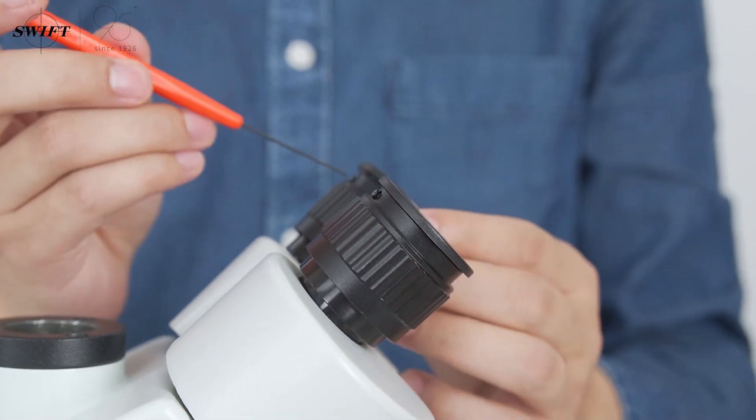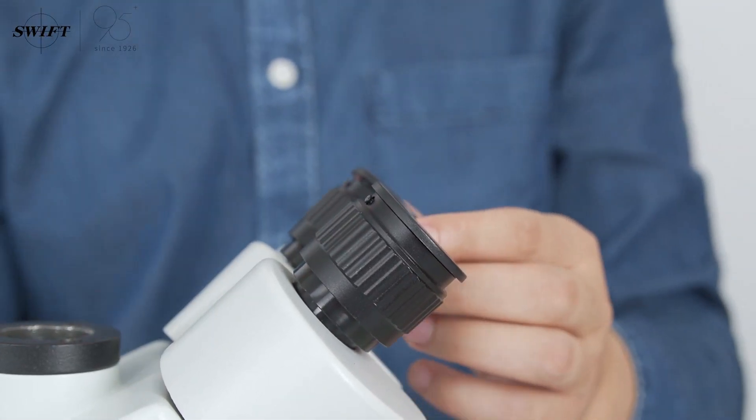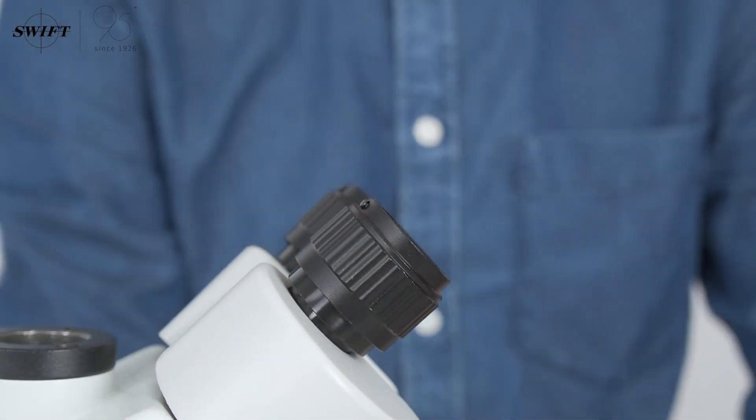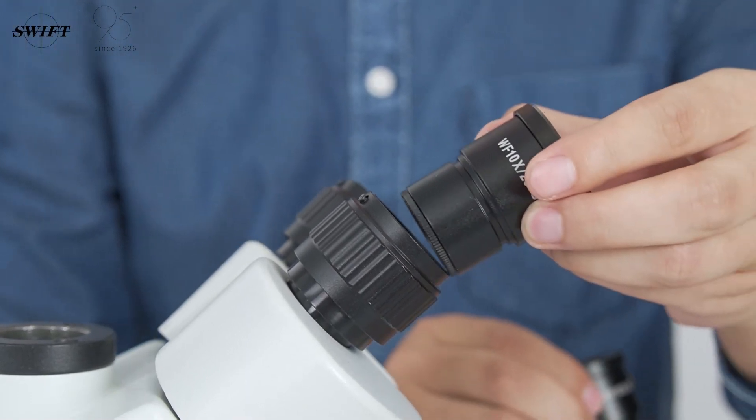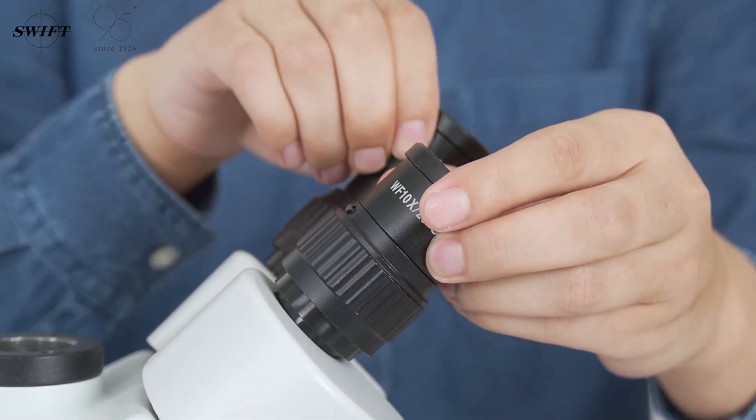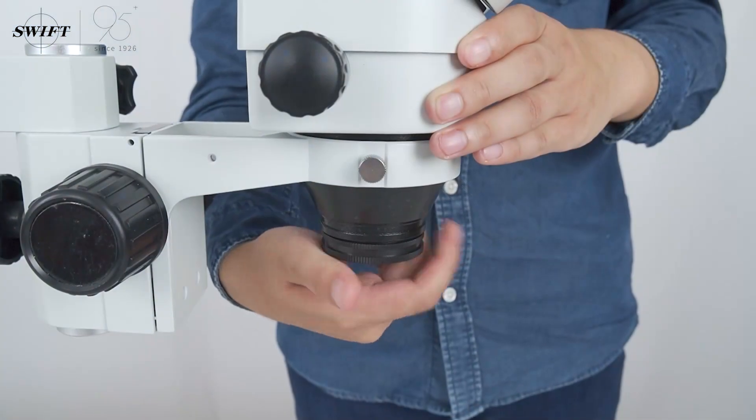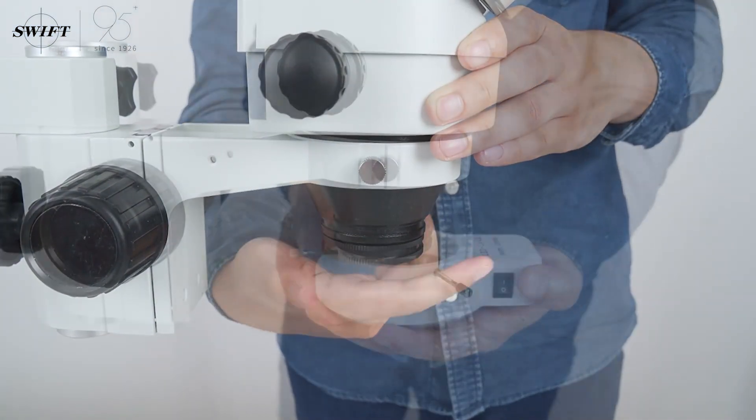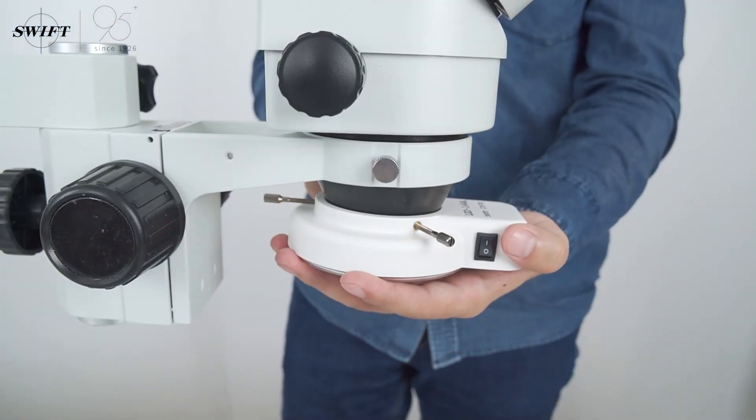Loosen the screws on the protective cover of the eyepiece tube and put in two eyepieces with the same magnification. Unscrew the dust cover and install the required LED AP light source.